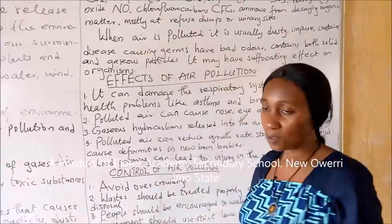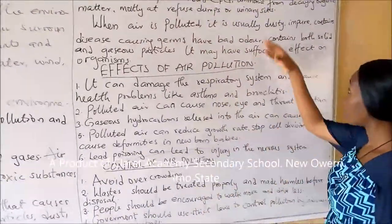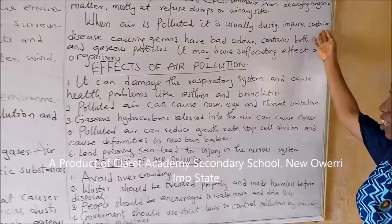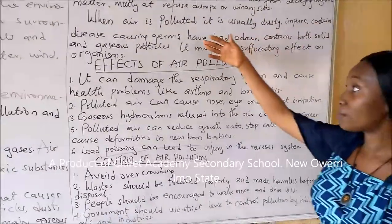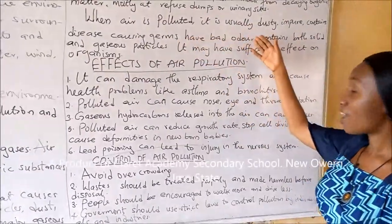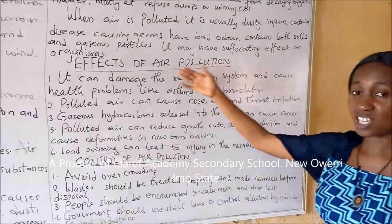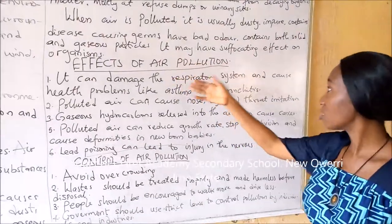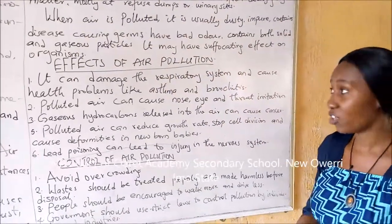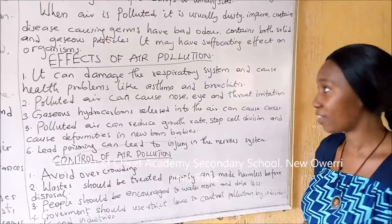When air is polluted, it tends to exhibit the following characteristics: it is dusty and impure and contains disgusting germs, which are called pathogens. It will have a bad odor. It contains both solid and gaseous particles. It may also have suffocating effects on organisms that inhale such polluted air.